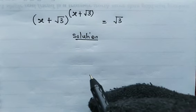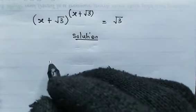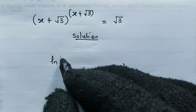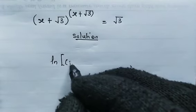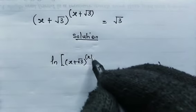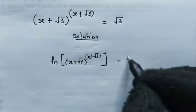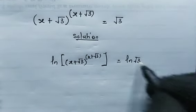First of all, let us natural log both sides of this equation. So here we have the natural log of x plus root 3, raised by of x plus root 3. This will be equal to the natural log of root 3.